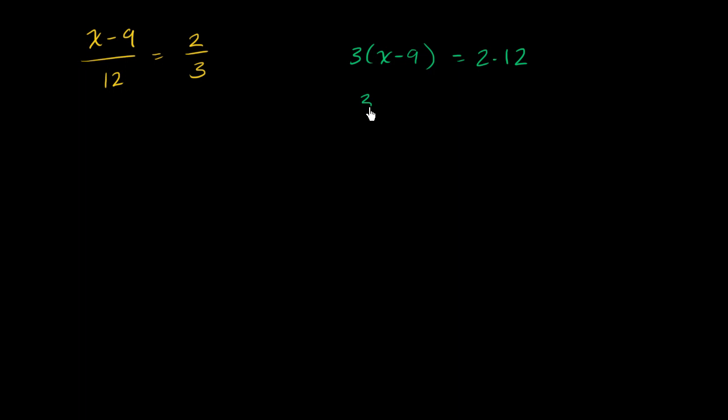And then you can distribute the 3. You'd get 3x minus 27 is equal to 24. And then you could add 27 to both sides. So let me add 27 to both sides, and we are left with 3x is equal to 51. And then x would be equal to 17.